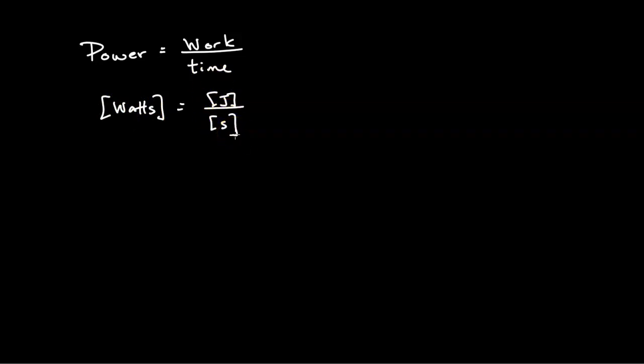So a watt is joules per second. Since work is force times displacement, we can also write power as equal to the force times displacement divided by the time. And if you remember from our previous video, displacement divided by the time is velocity. So another way to calculate power is going to be force. If you have a constant force, it's going to be the force times the velocity. So we've got two ways to calculate power.